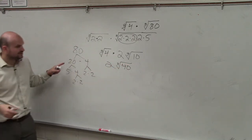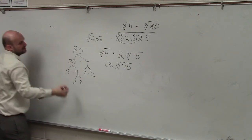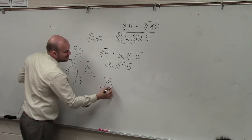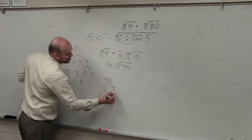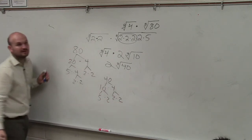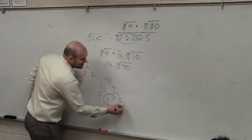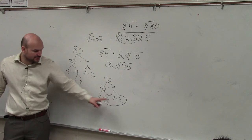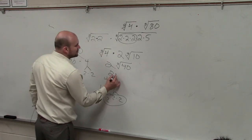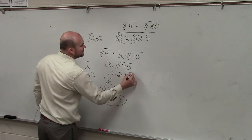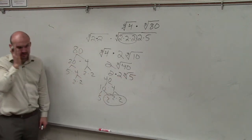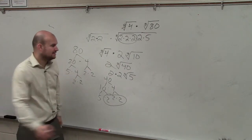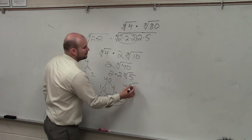Now, again, I want to look at whether I can break down 40 and simplify it again. Well, 10 times 4, 5 times 2, 2 times 2 — so again I can simplify this. The cube root of 40 is going to be 2 times the cube root of 5. So I have 2 times 2 cube root of 5. Does everybody see how I got that? Because once I multiplied, I was able to simplify again. So my final answer is 4 cube root of 5.